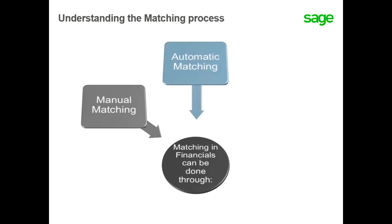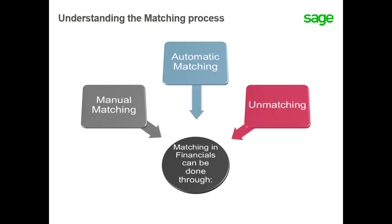Or, automatic matching, where transactions are scanned in specific collective accounts, including a single site, collective account, company, ledger, business partner, and a date range to automatically match transactions. It may also be necessary to unmatch transactions that are matched incorrectly.